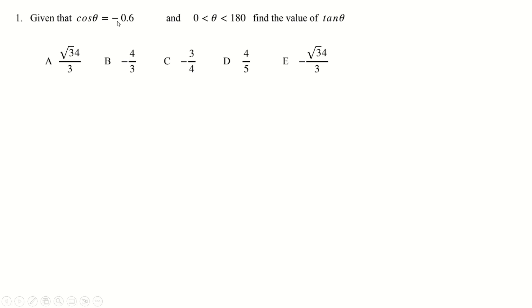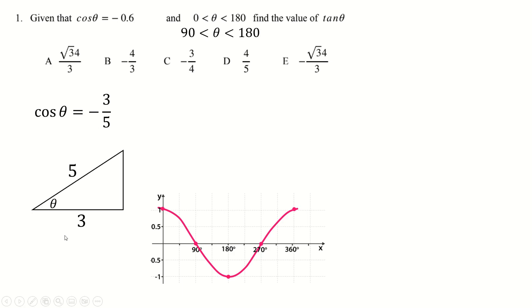Question 1: cos theta is minus 0.6. Now that's negative. If you look at the cos graph, cos is negative between 90 and 180, specifically in this range. So that narrows down theta for us. 0.6 is obviously 3 fifths. And then you can draw a little triangle here because adjacent over hypotenuse uses cos. And then you can get this because it's Pythagorean, the 3-4-5 triangle, and then we can say tan is 4 thirds.